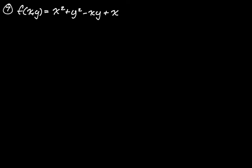We have f(x, y) = x² + y² - xy + x. To find the critical points, we need partial x and partial y. So partial x is going to be 2x, then minus y, plus 1.